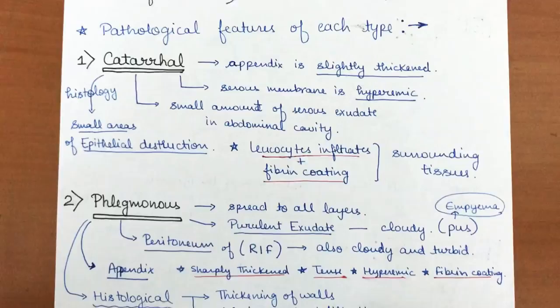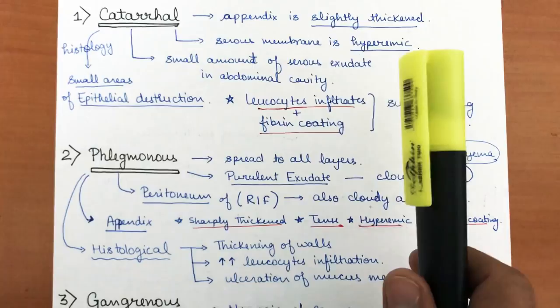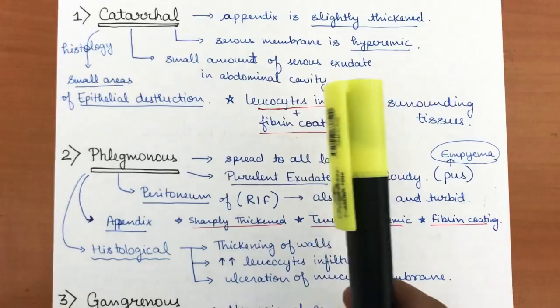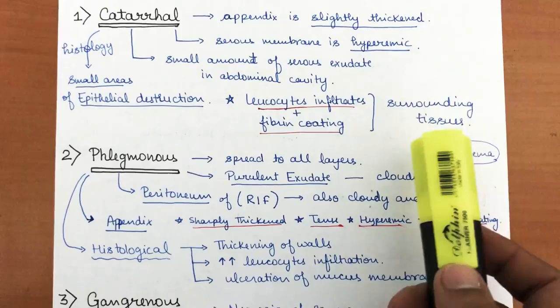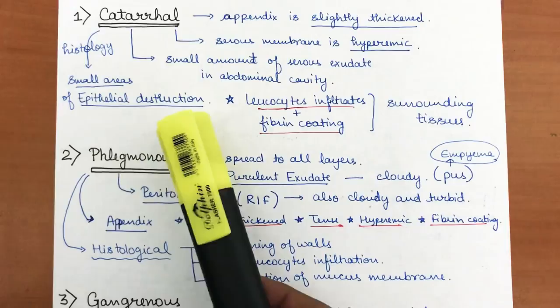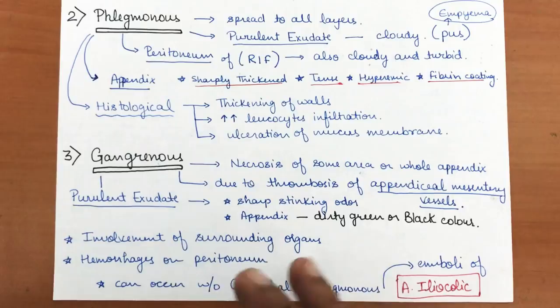In cataral acute appendicitis, the appendix is slightly thickened and the serous membrane is hyperemic, meaning blood is supplying properly. There is a small amount of serous exudate in the abdominal cavity, and leukocyte infiltrates with fibrin coating are present in the surrounding tissues. Histologically, small areas of epithelial destruction are seen under the microscope.